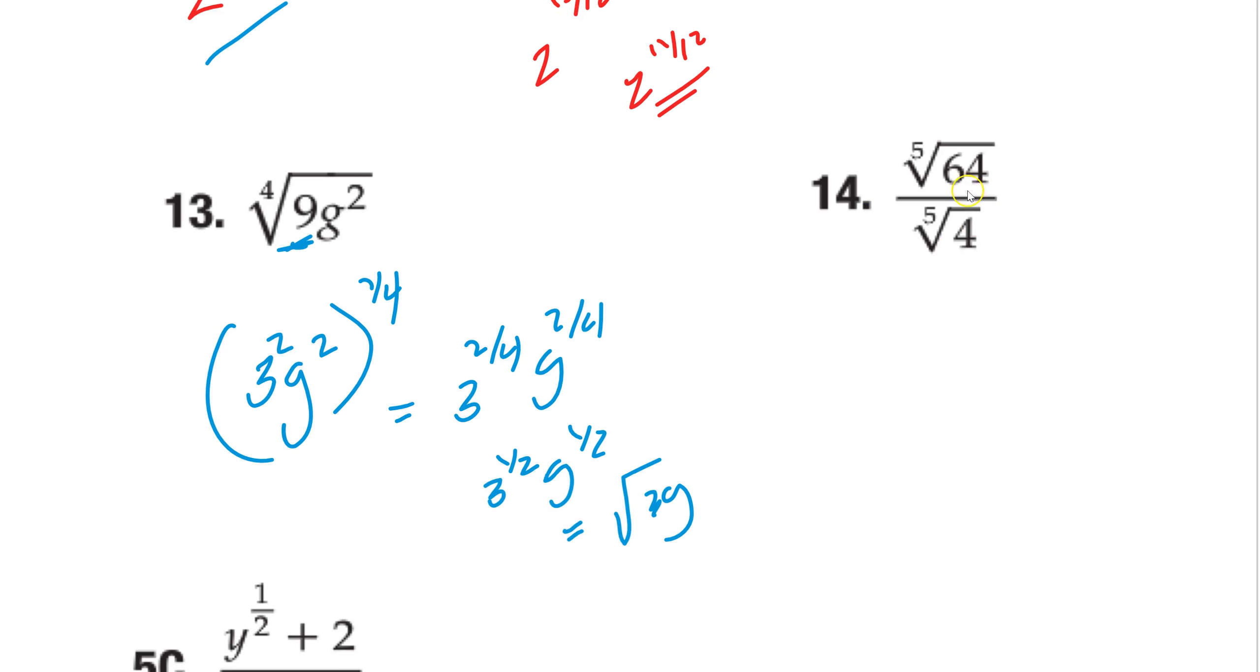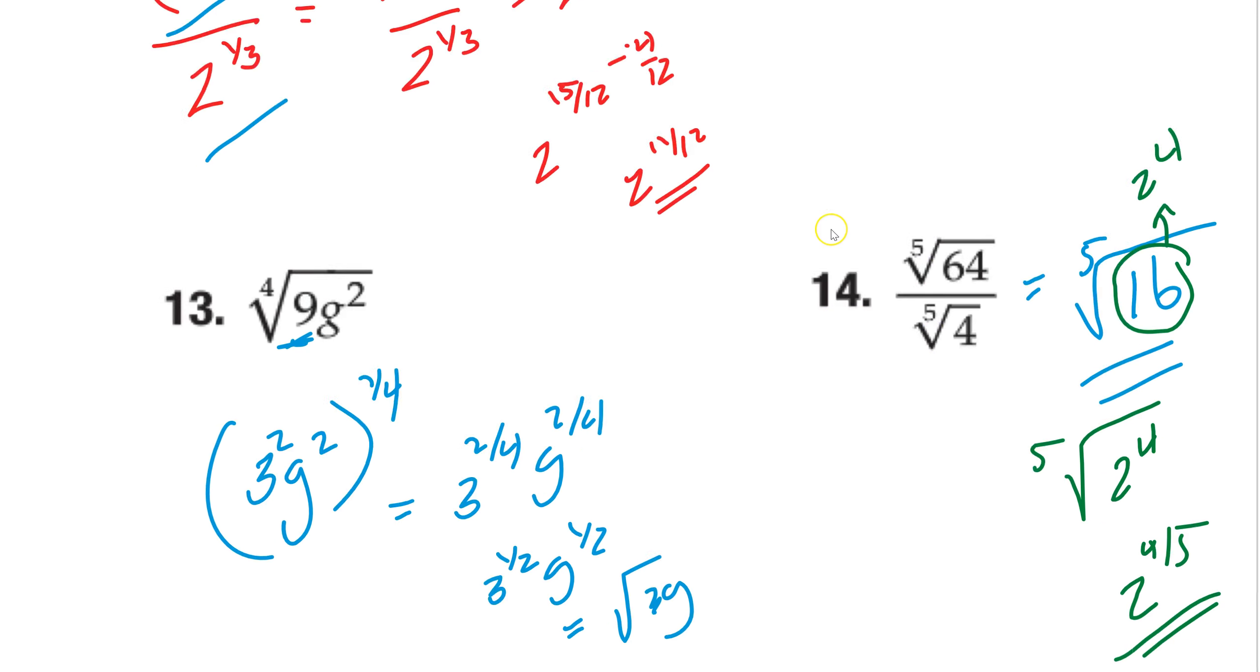This one's a little different. Because notice how they have the same power, the same root. So I could actually divide these. I could get 5th root of 64 over 4, which is 16. Like, okay, done. But, again, all this is a preview to the next chapter. So I want you to get, this is all about practice. How can I rewrite 16? Write that as 2 to the 4th. So the same thing as saying 5th root of 2 to the 4th. There's the same thing as saying 2 to the 4 5ths.